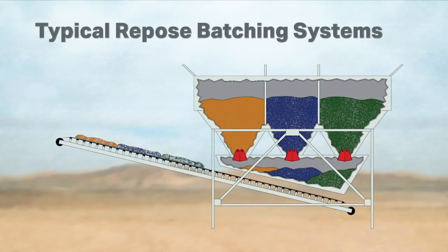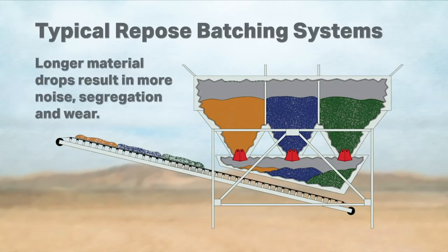A typical repose batching system has longer material drops, which result in noise, segregation of material, and additional wear to the bin walls.